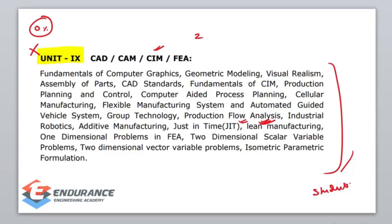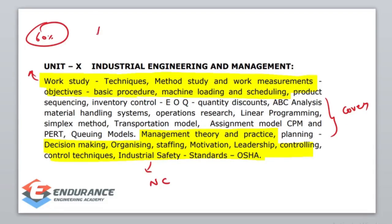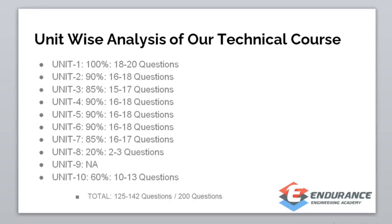This is the effort put into each unit. Now coming to the 10th unit — there is a highlight of the unit. Topics in the yellow color area are not covered; the other areas are covered. So around 60% is covered and 40% is not covered. Now, distributing the question estimates: Unit 1 — minimum 18, maximum 20 questions.